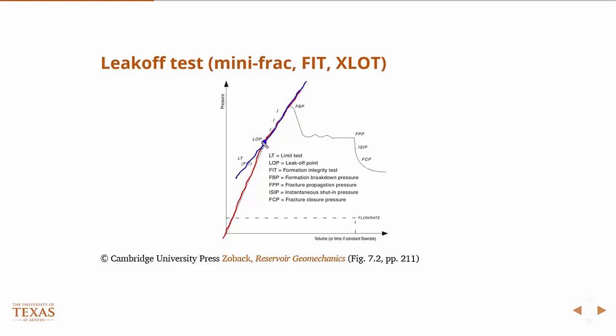There's some tortuosity and excess resistance in the fluid associated with going through the perforations, and this is magnified if you're using high-viscosity fluid — not necessarily an issue with water. So normally, as a first pass, this leak-off point can be assumed, ignoring those caveats, to be S3.